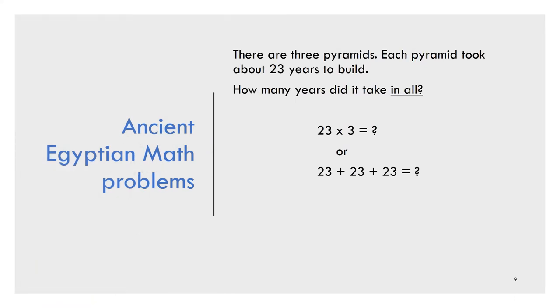Ancient Egyptian math problem. There are three pyramids. Each pyramid took about 23 years to build. How many years did it take in all? 23 times 3 equals, or 23 plus 23 plus 23 equals. Your time starts now.